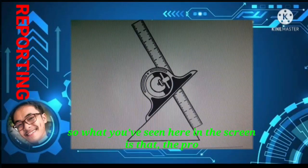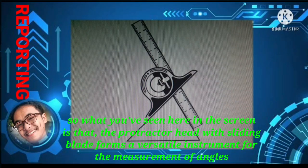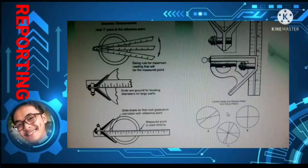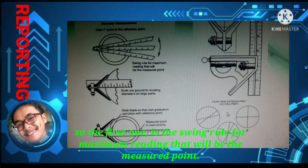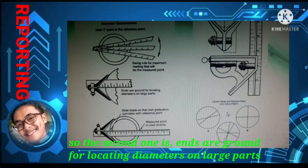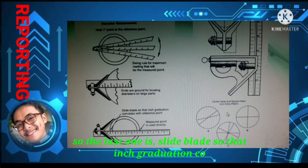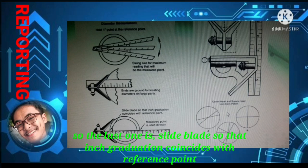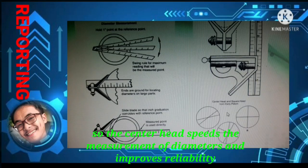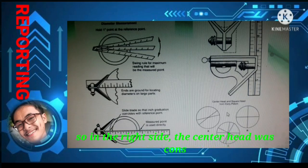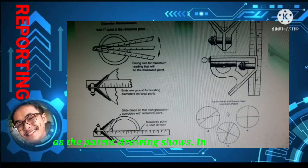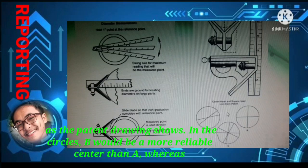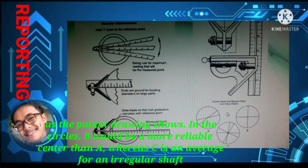The protractor head with a sliding blade forms a versatile instrument for the measurement of angles. For diameter measurement, the focus is on holding one point at the reference point. The first method is swinging the rule for maximum reading to the measured point. The second is using the answer ground for locating diameters on large parts. The third uses a slide blade so that the inch graduation coincides with the reference point. The center head speeds measurement of diameters and improves reliability.